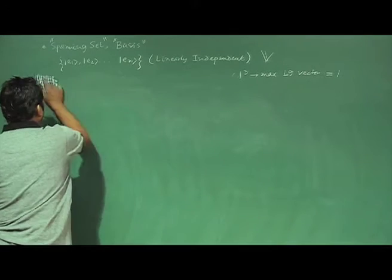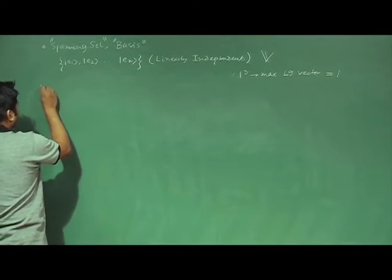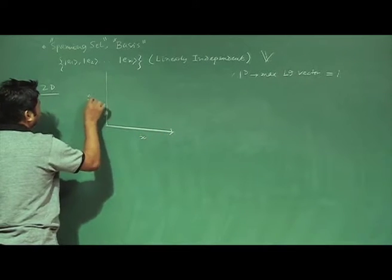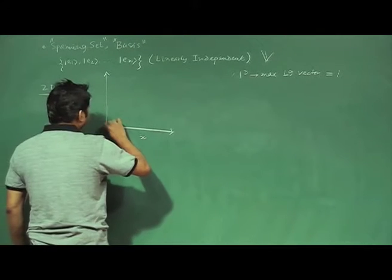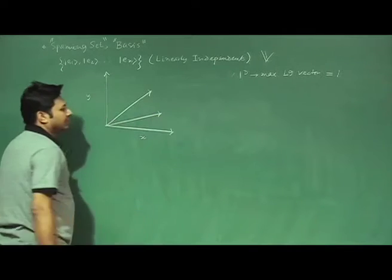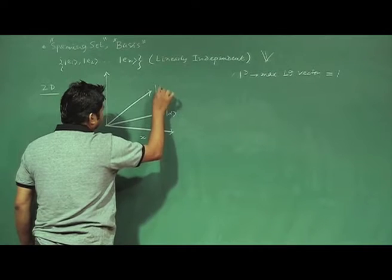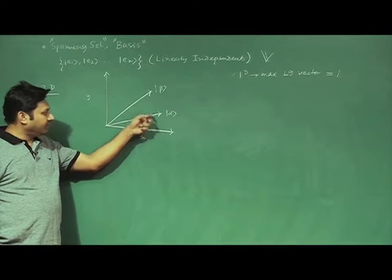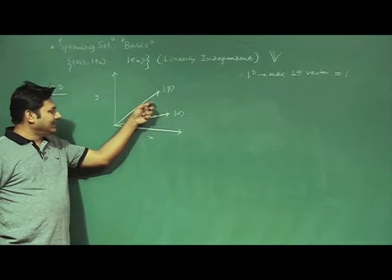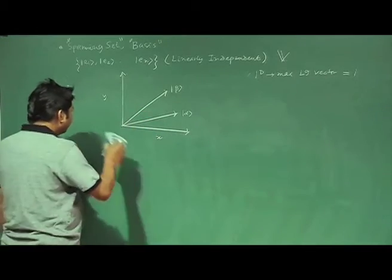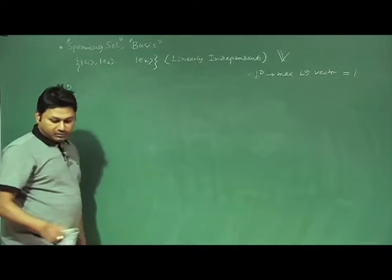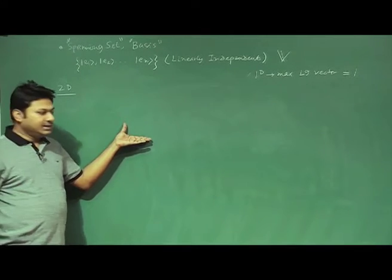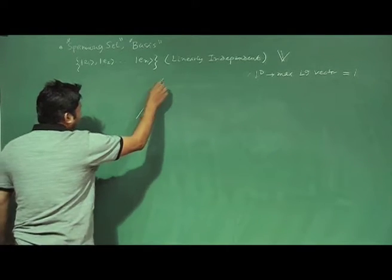Now let us find out what is happening in the case of 2D. In the 2D plane with x and y directions, if I have two vectors alpha and beta pointing in different directions, there is no way I can write alpha in terms of beta. So essentially alpha and beta are linearly independent to each other. We can also show this in a more general way.